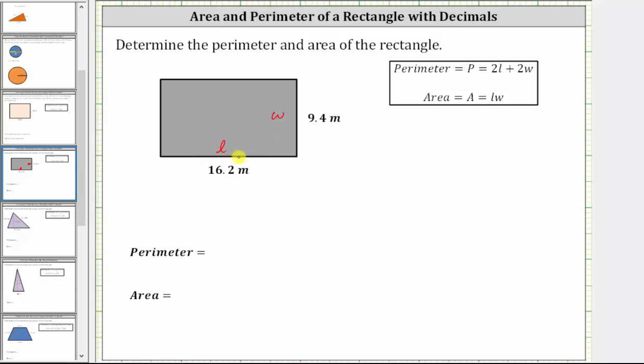Or because we have a rectangle, we can also determine the perimeter by using the formula P equals 2L plus 2W, where 2L is two times the length and 2W is two times the width. But since the length and width are in decimal form, I think it'll be easier to add the lengths of the four sides rather than determine two products involving decimals and then a sum.